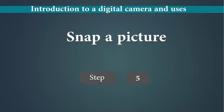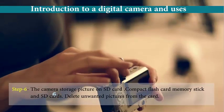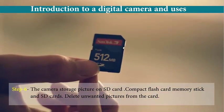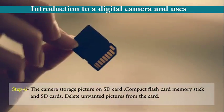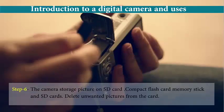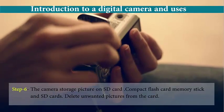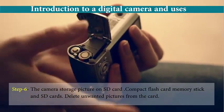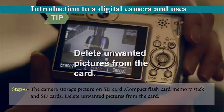Step 5: Snap a picture. Step 6: The camera stores pictures on an HD card. Storage options include compact flash cards, memory sticks, and HD cards. Delete unwanted pictures from the card to free up space.